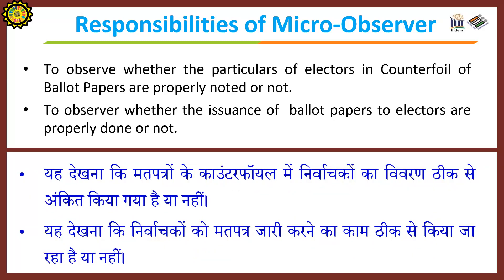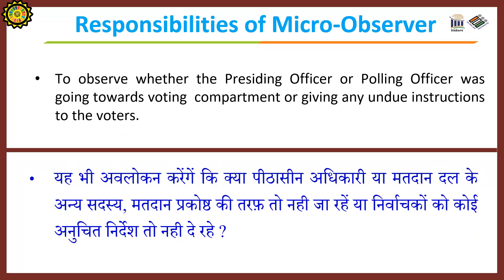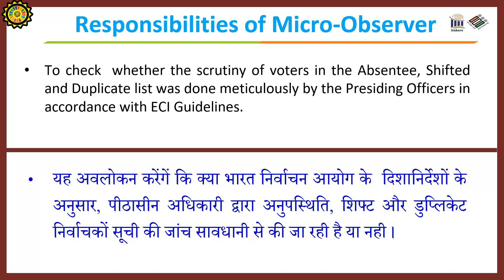Further responsibilities include observing whether the particulars of electors in the counter-foil of the ballot papers are properly noted, whether the issue of ballot papers to electors is properly done, whether the presiding officer or polling officers were going towards the voting compartment or giving any undue instructions to voters, and whether the scrutiny of voters in the absent, shifted, and duplicate list was done meticulously by the presiding officers in accordance with the Commission's guidelines.